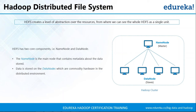The actual data is stored in the data nodes. We replicate the data blocks present in the data nodes, and by default the replication factor is three, meaning there are three copies of each file. Why do we need replication? Since we are using commodity hardware and the failure rate of these hardware is pretty high, if one of the data nodes fails, we won't lose that data block. The replication factor depends on your requirements.